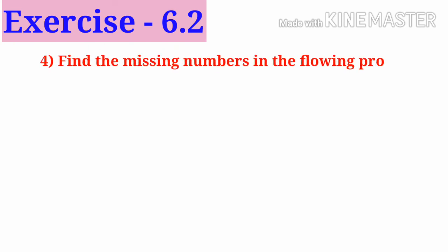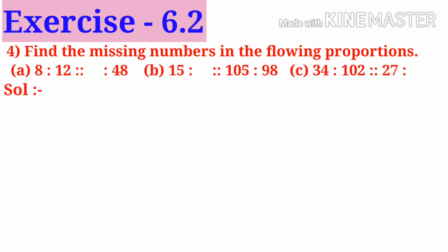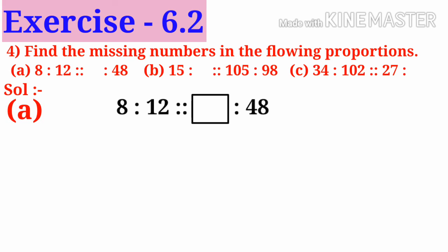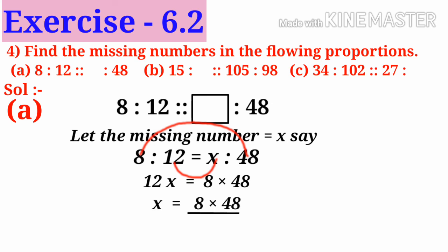Now number 4: Find the missing numbers in the following proportions — A, B, C. Solution. Number A: 8 is to 12 is as box is to 48. Let the missing number be x. Then 8 is to 12 is equal to x is to 48. Here both are in proportion, so product of means is equal to product of extremes. So 12 into x is equal to 8 into 48. So x is equal to 8 into 48 divided by 12. On simplification: x equals 32. So the missing number is 32.